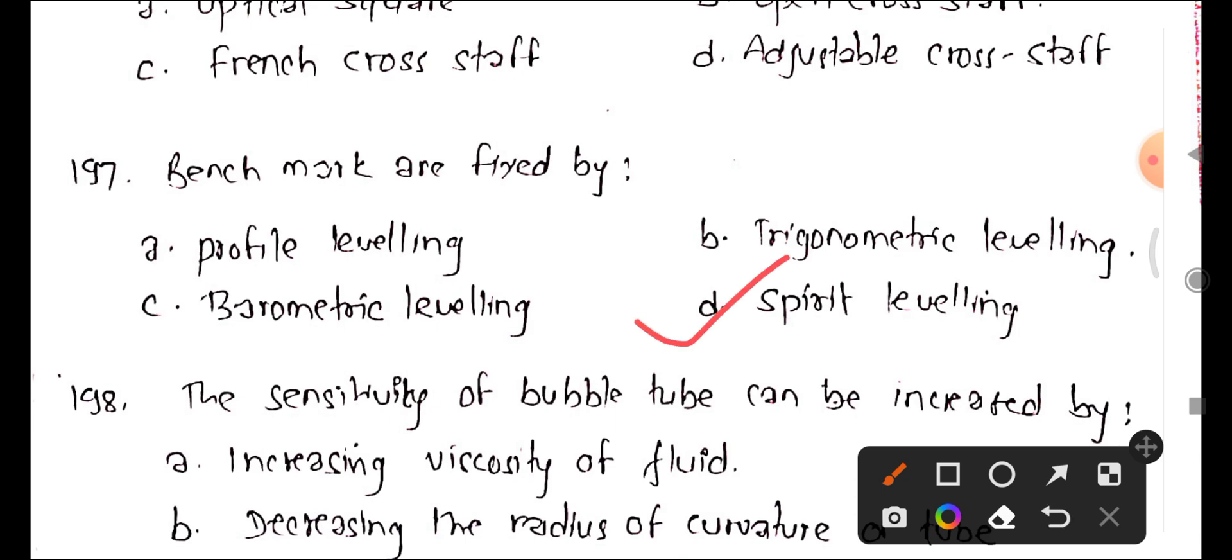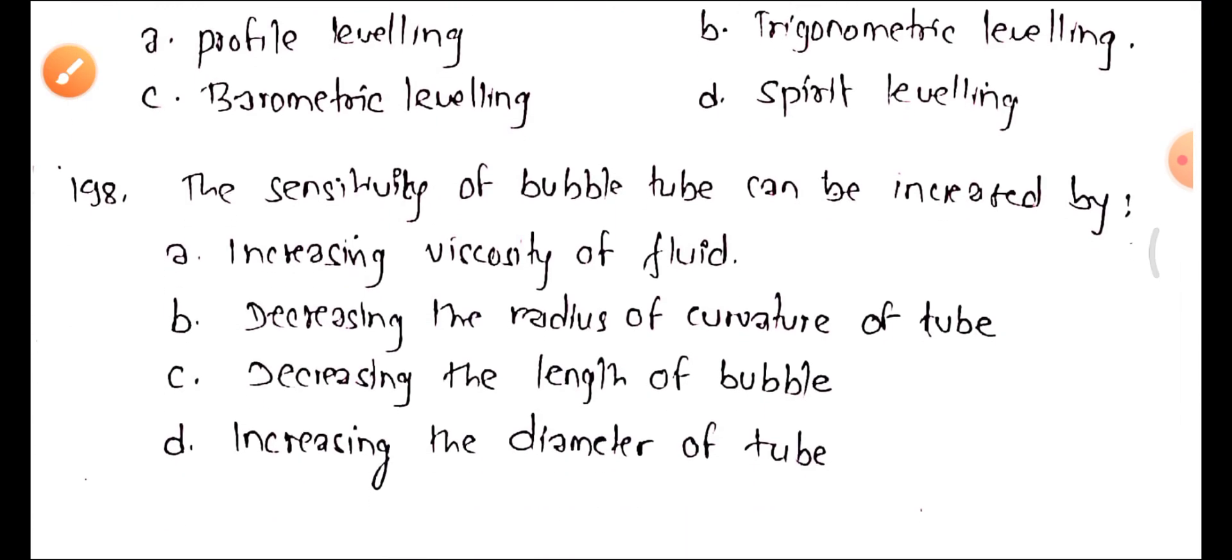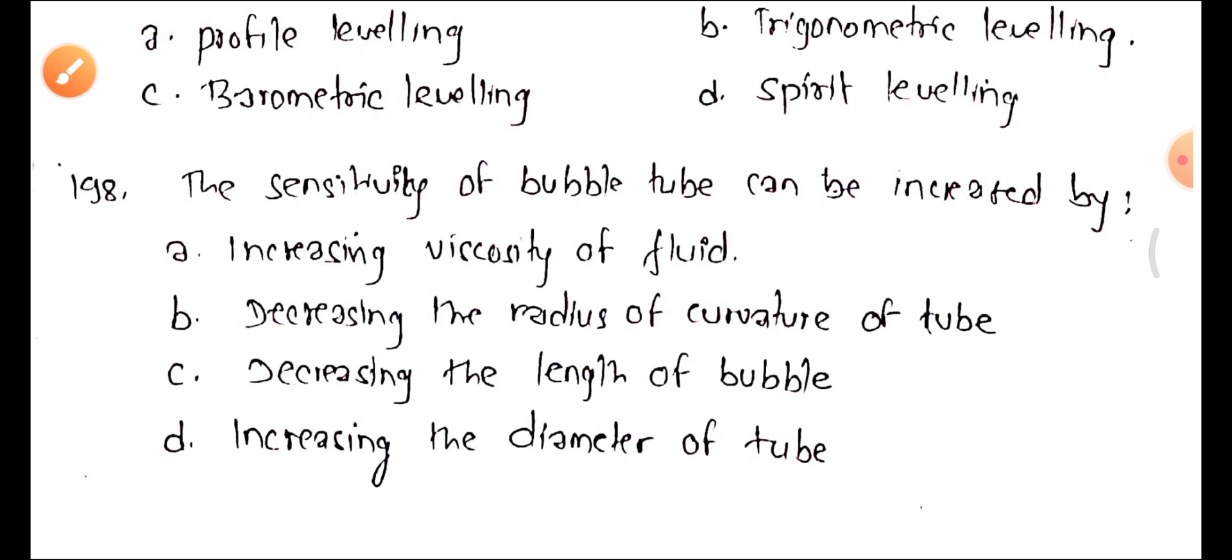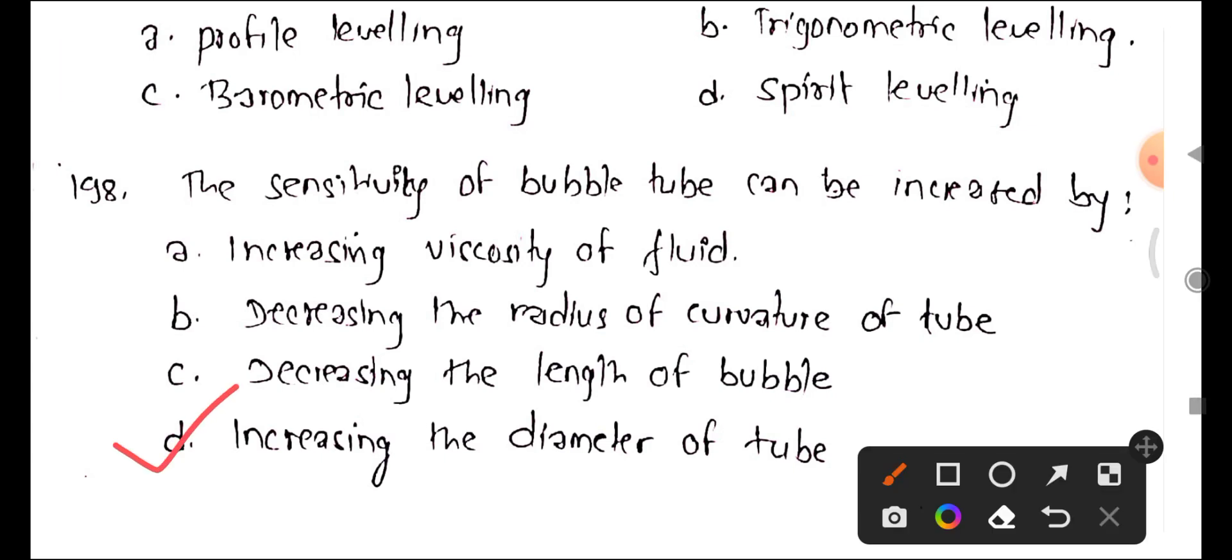Question 198: The sensitivity of bubble tube can be increased by: A increasing viscosity of fluid, B decreasing the radius of curvature of tube, C decreasing the length of bubble, D increasing the diameter of tube. The answer is option D, increasing the diameter of tube.